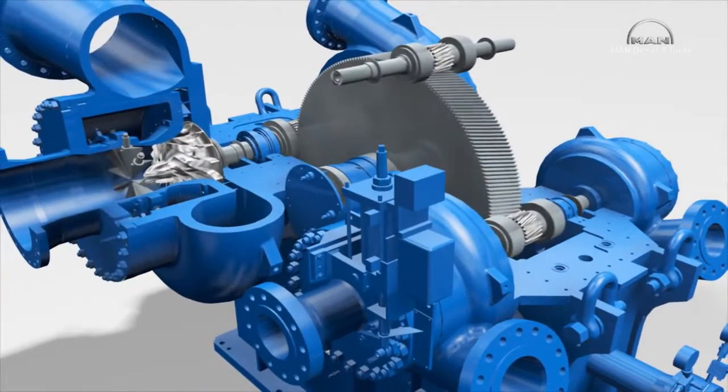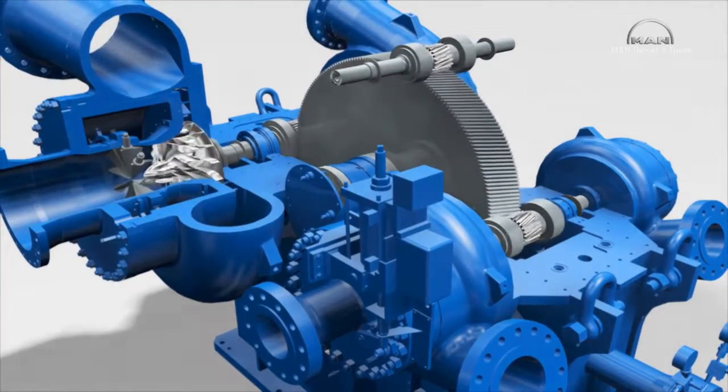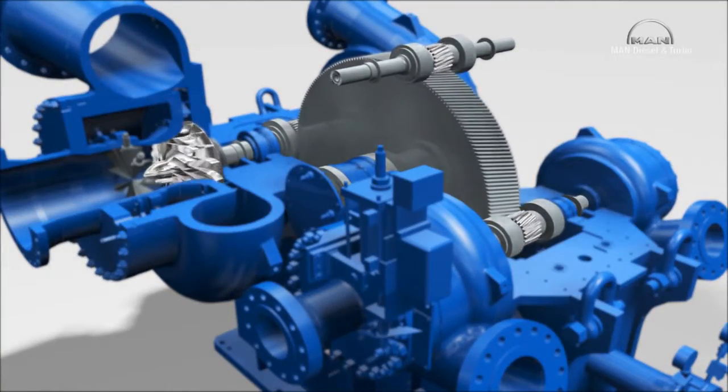Each pinion shaft meshes in the bowl gear with its central teeth. The pinions have varying numbers of teeth, which gives different gear ratios depending on the particular pinion, and enables optimal speeds for the two individual compressor stages.